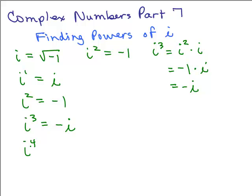Now, what about i to the 4th? i to the 4th is really just i squared times i squared, again using laws of exponents. So we have negative 1 times negative 1, so i to the 4th is 1.